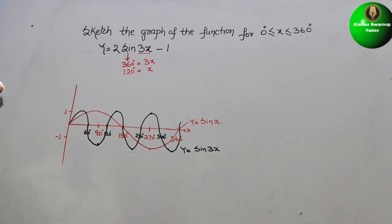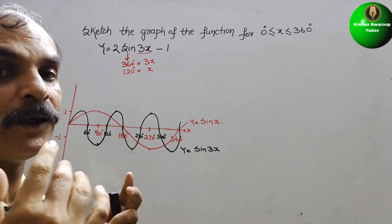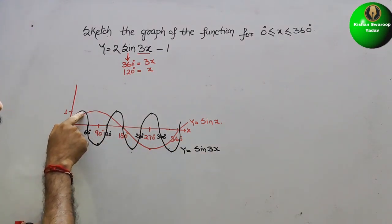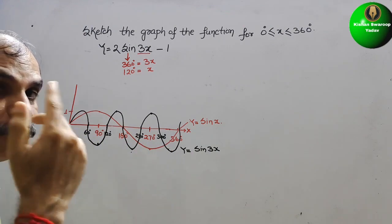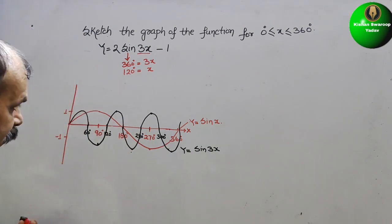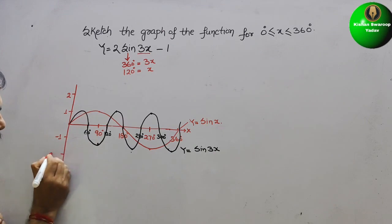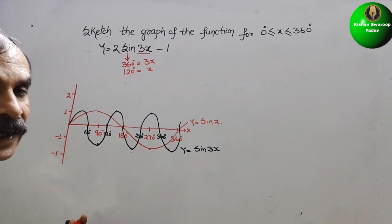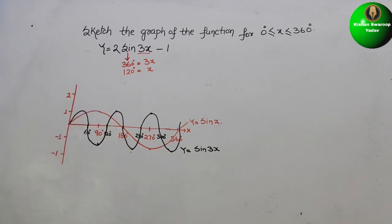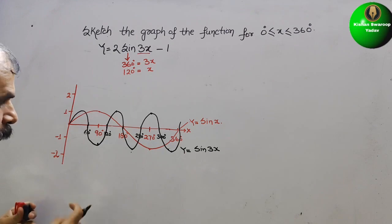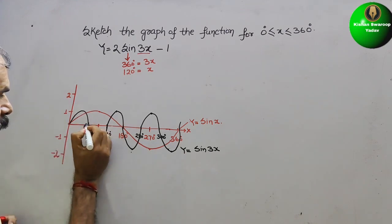Now we apply the factor of 2, which increases the amplitude by 2. The amplitude, which was 1, becomes 2, so the wave now oscillates between 2 and minus 2. The period remains the same — still three cycles in 360°.